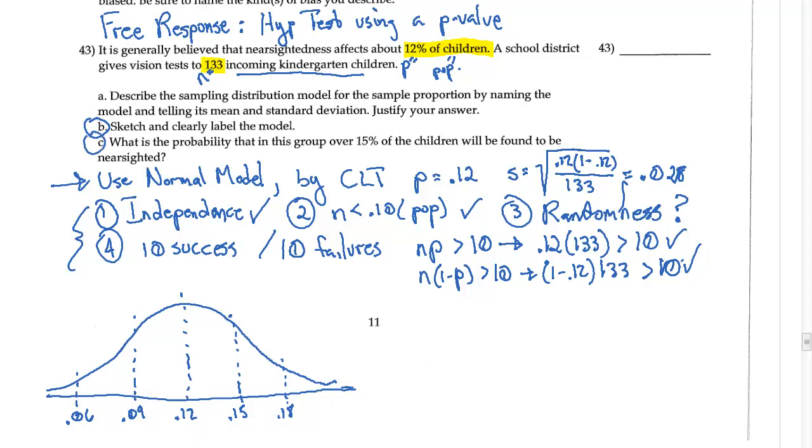So now C, what is the probability that in this group over 15% of the children will be found to be nearsighted? So for C now, this was A, this is B, and now this is C. So what I need to do is a p-value test. So now I need my calculator.